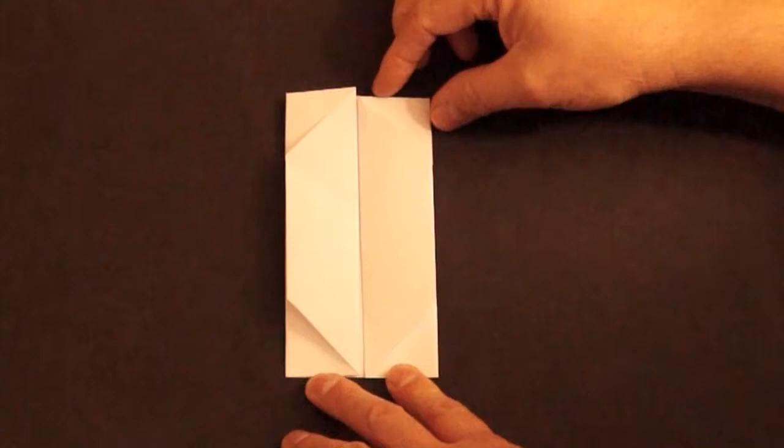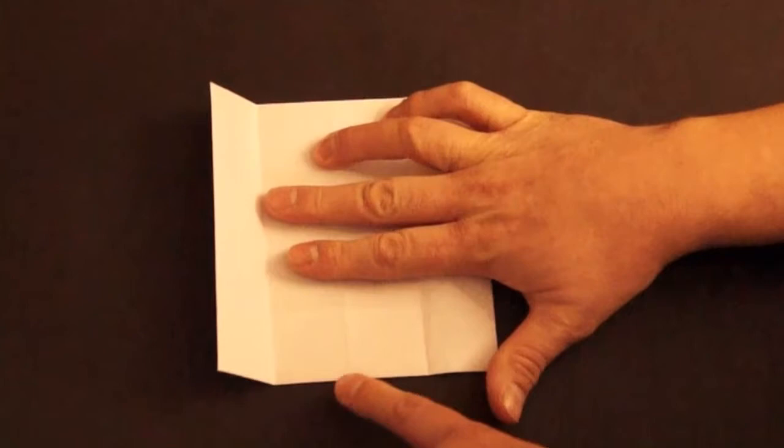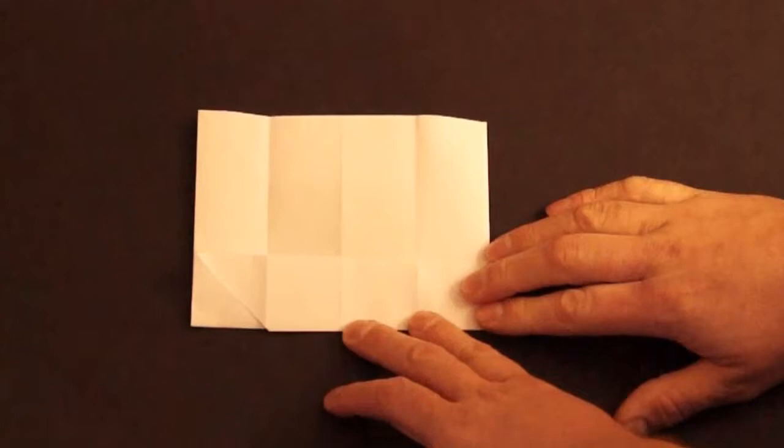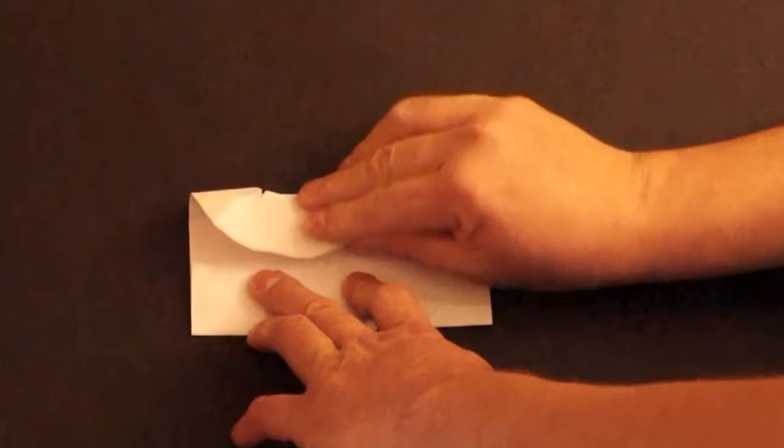Open those two back up. Now fold the bottom to the center and the top to the center. It should meet in the middle but not overlap.